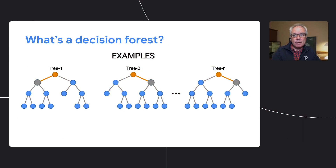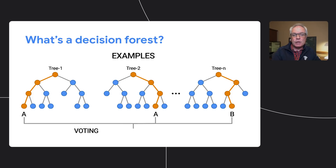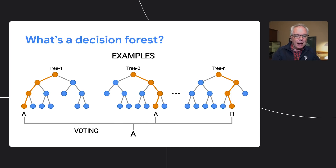A decision forest is a family of ML models that can outperform neural networks with certain types of data. Starting with TensorFlow 2.5, you can use native decision trees and forests in Keras with TensorFlow using a high-level API.